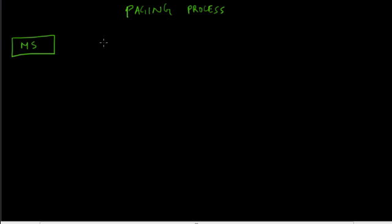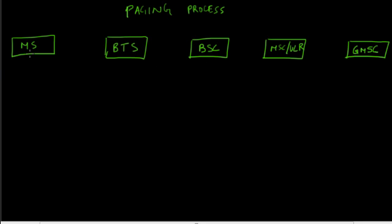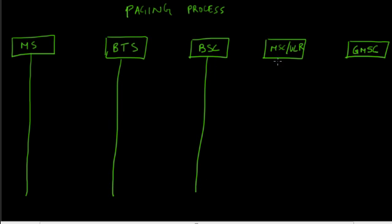This is the mobile station. This is the BTS — base transceiver station. This is the BSC, this is the MSC VLR, and this is the gateway MSC. For convenience, let's show the protocol and the messages going to and fro between these components.